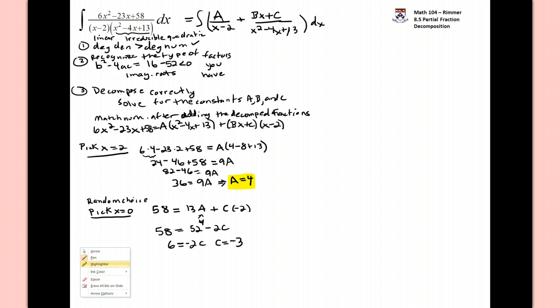Subtract the 52, and we get that 6 is negative 2c, or the fact that c is negative 3. Great. Chasing down these constants, we know two of them, we just need one more. We need to be able to go get b. So we do it again. We pick another value of x.